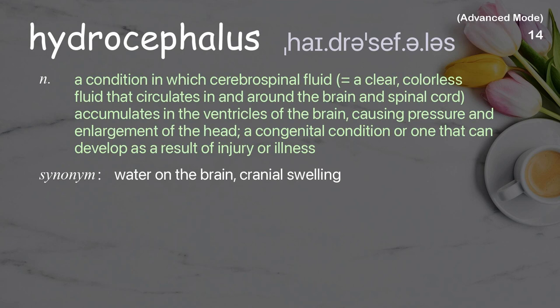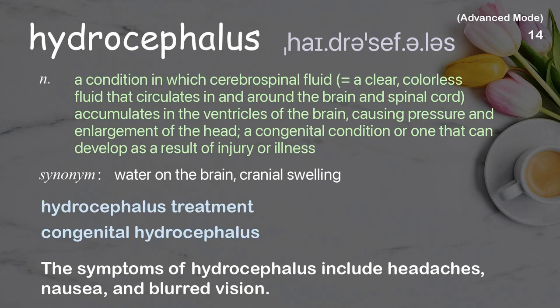Hydrocephalus: A condition in which cerebrospinal fluid — a clear, colourless fluid that circulates in and around the brain and spinal cord — accumulates in the ventricles of the brain, causing pressure and enlargement of the head; a congenital condition or one that can develop as a result of injury or illness. Examples: Hydrocephalus treatment. Congenital hydrocephalus. The symptoms of hydrocephalus include headaches, nausea, and blurred vision.